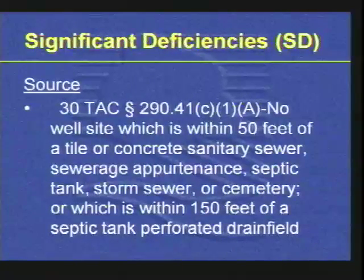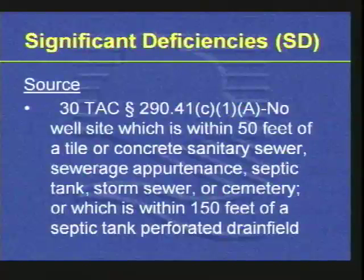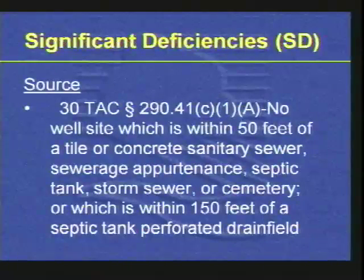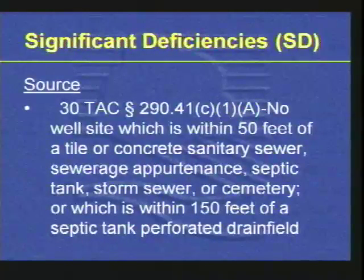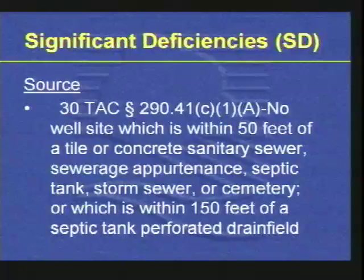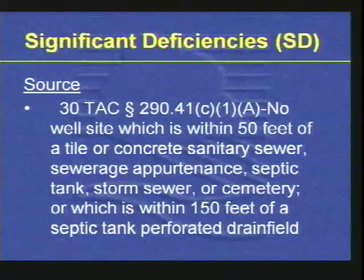Let's go through that list. The first element is source. Rule citation 290.41 C1A — no well site which is within 50 feet of a tile or concrete sanitary sewer, sewage appurtenance, septic tank, storm sewer, or cemetery, or which is within 150 feet of a septic tank perforated drain field.